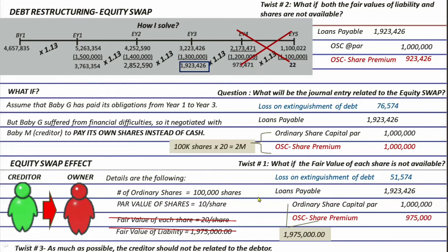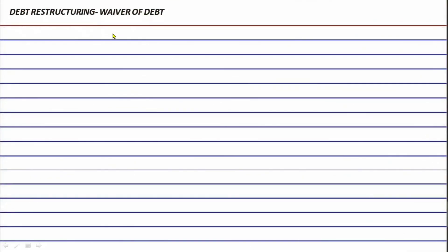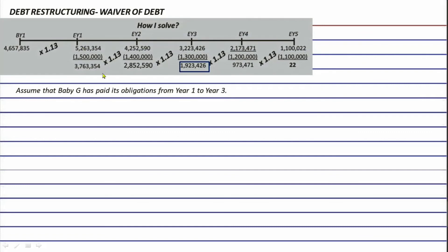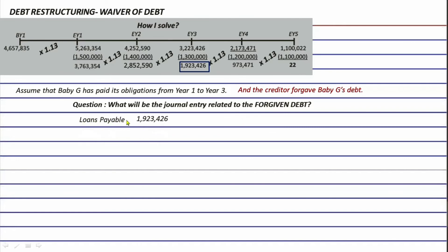Now for the last scenario: what if the creditor forgave the debt? Assuming Baby G paid only up to the third year due to financial difficulties and the creditor forgave the remaining debt, the journal entry is simply debit loans payable for 1,923,426 and credit gain on extinguishment of debt for the same amount.